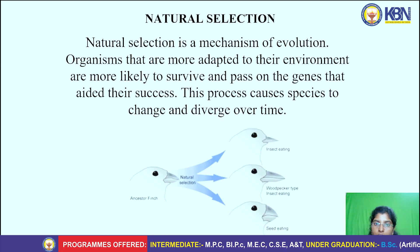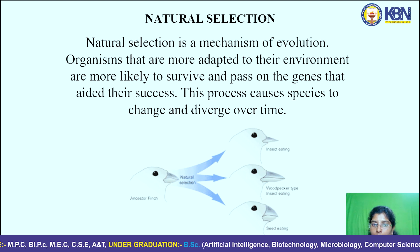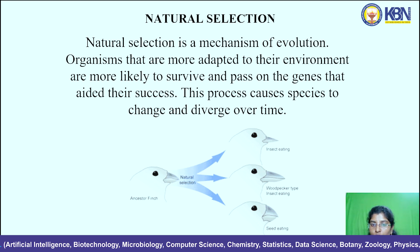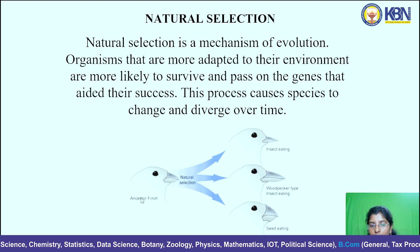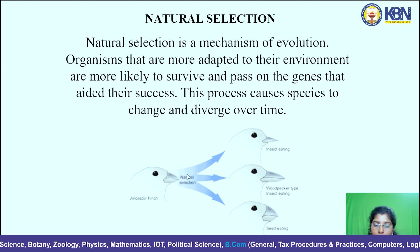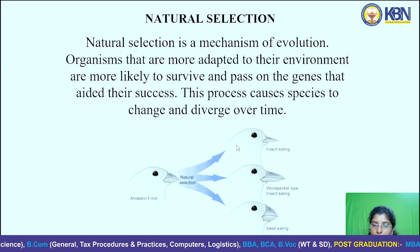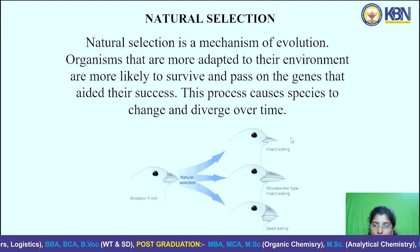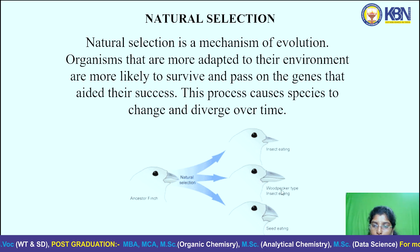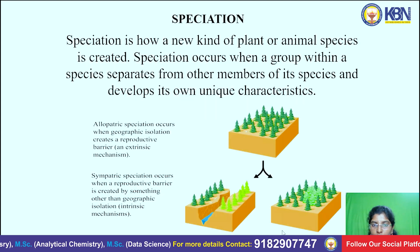Natural selection is a mechanism of evolution. Organisms that are more adapted to their environment are more likely to survive and pass on traits that aided their success; this process causes species to change and diverge over time. For example, ancestor finches had a certain beak shape, but based on changes in food availability, the beak shape changed. Insect-eating birds developed woodpecker-type beaks, while seed-eating birds developed different beak shapes.